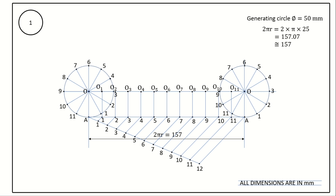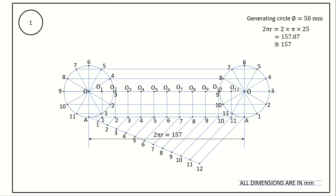Now draw horizontal lines to mark the height of point A after each part of revolution. Draw horizontal lines from points 11 and 1 — these pass through both circles. Similarly, draw horizontal lines from 10 and 2, from 9 and 3, from 8 and 4, from 7 and 5, and from 6 to 6. I now know the center points and the height of point A after each part of revolution.